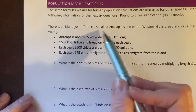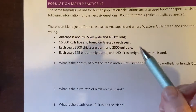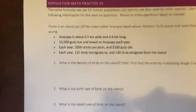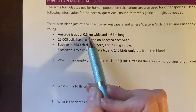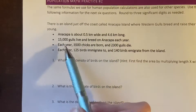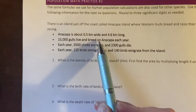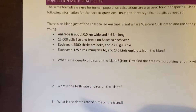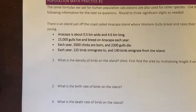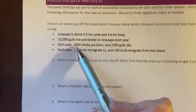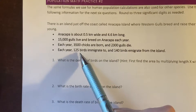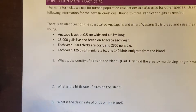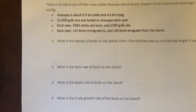There's an island just off our coast called Anacapa Island where Western gulls breed and raise their young. Here are the stats: it's half a kilometer wide and 4.6 kilometers long. 15,000 gulls live and breed on Anacapa each year. Each year 3,500 chicks are born and 2,300 gulls die. Each year 125 immigrate in and 140 emigrate off of the island.